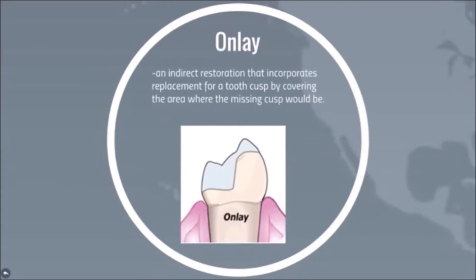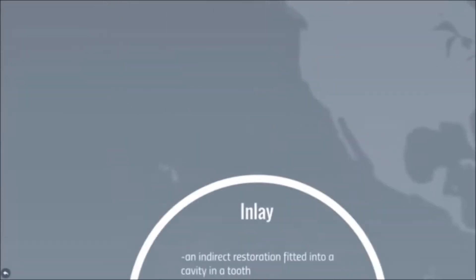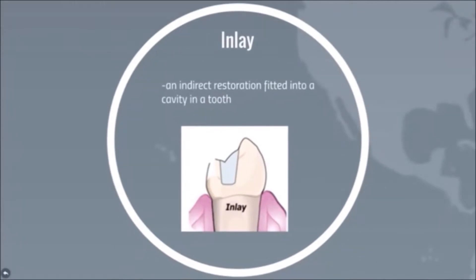So what is an onlay? An onlay is an indirect restoration that incorporates replacement for a tooth cusp by covering the area where the missing cusp is. And what is inlay? An inlay is an indirect restoration that is fitted into a cavity in the tooth.